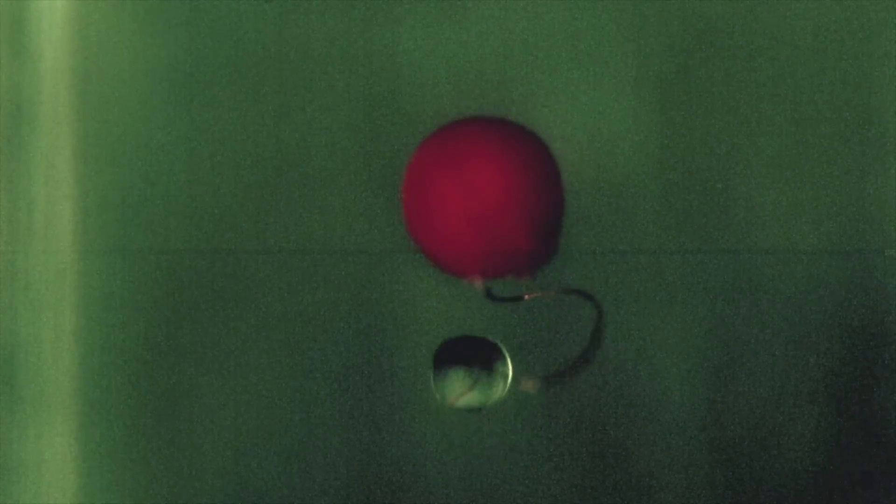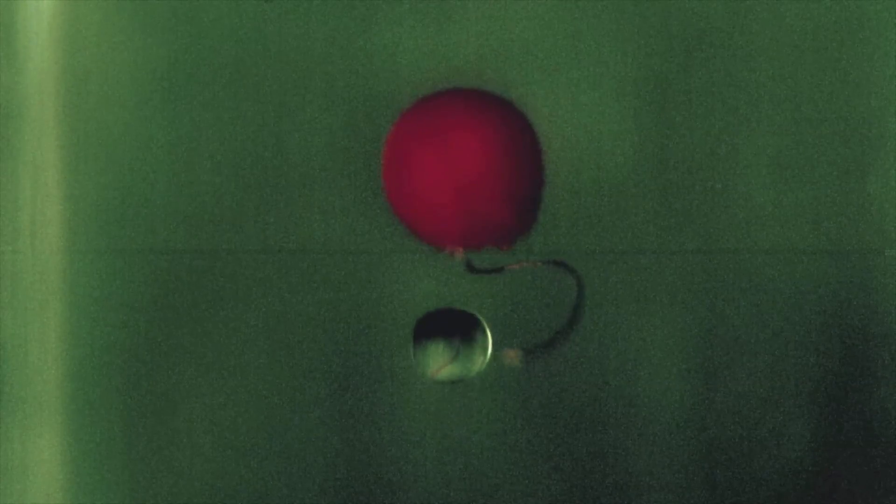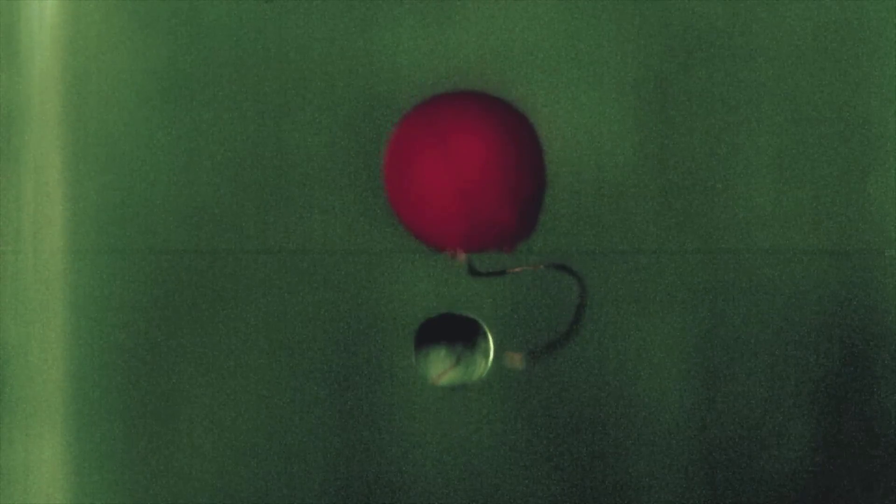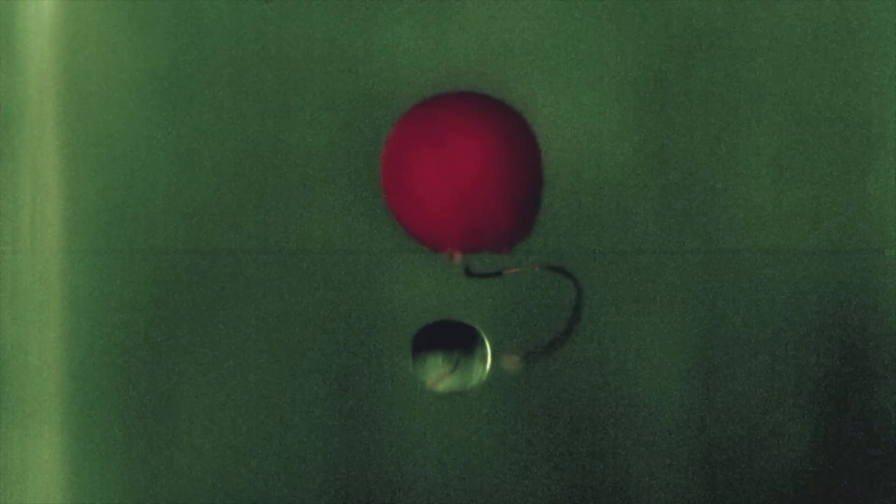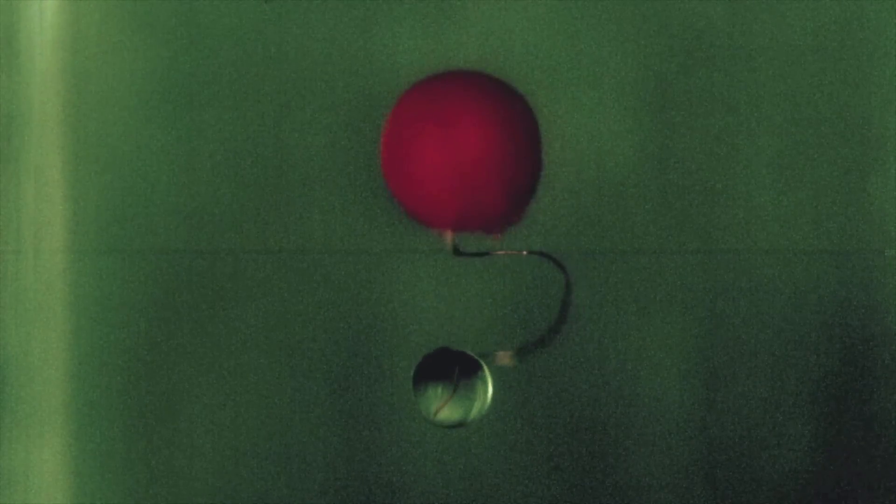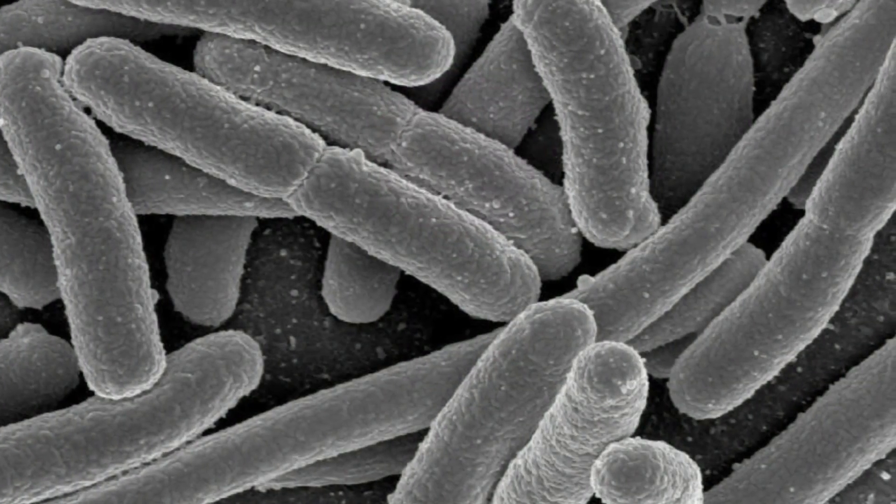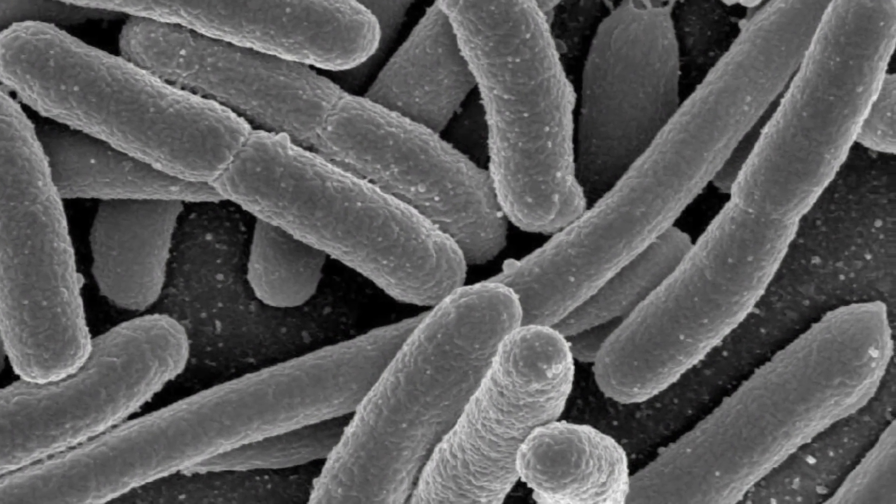So what do we mean by swimming? Well what we mean by swimming is that we've got an object in some liquid perhaps, and in order to propel itself along, the object has to deform in some way. It has to move its body parts in some way. It turns out that for objects that are moving very slowly or very small objects in water such as bacterium, in such a case, the viscosity of the water is very important.